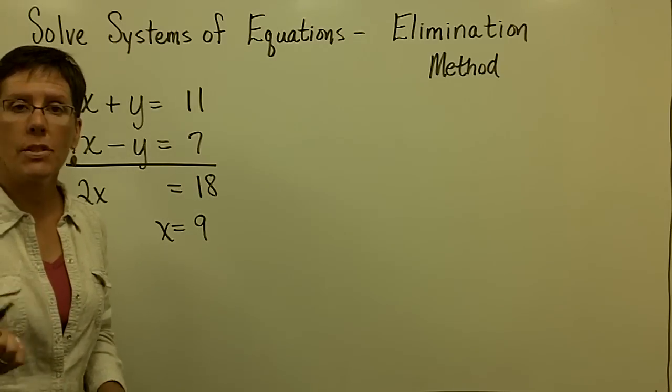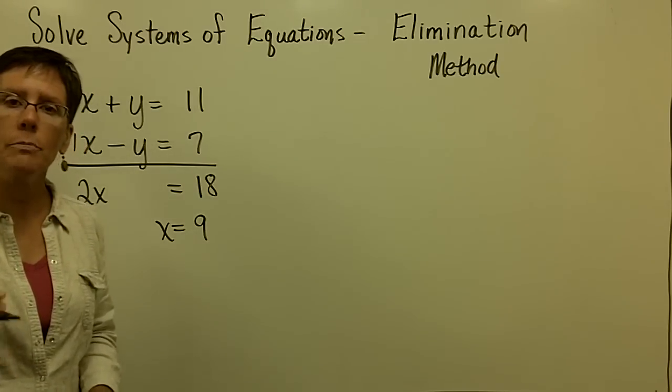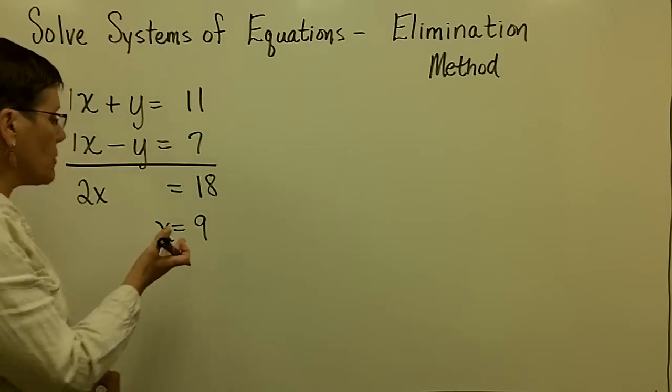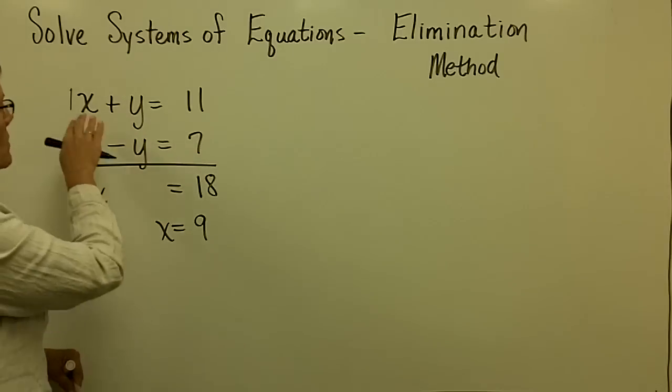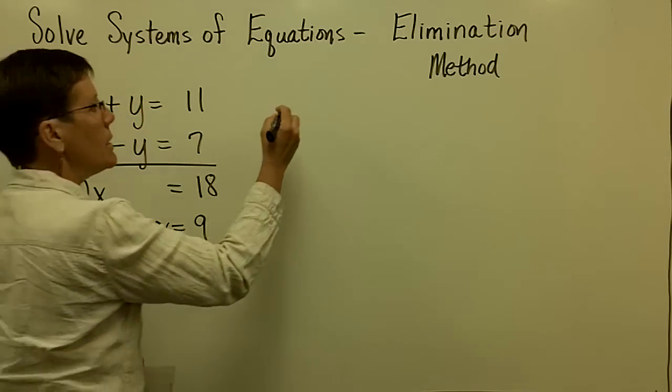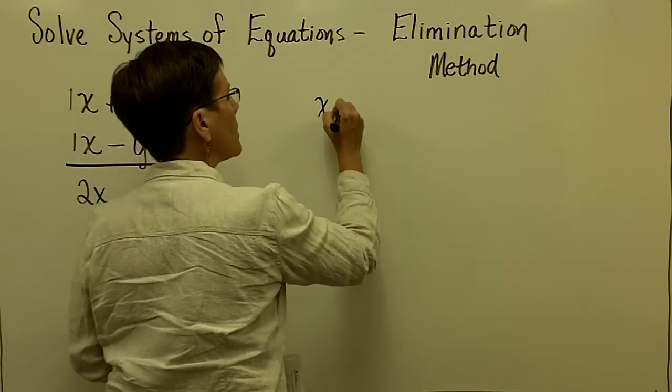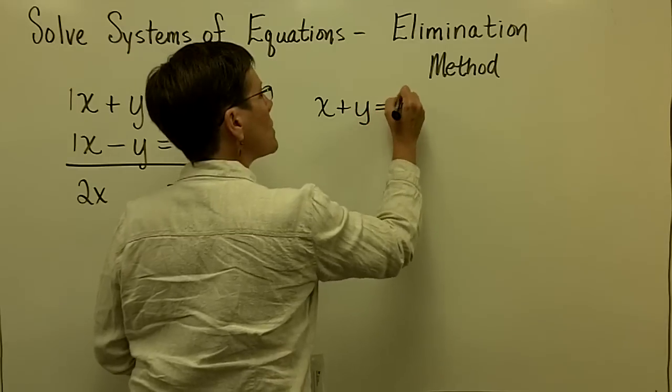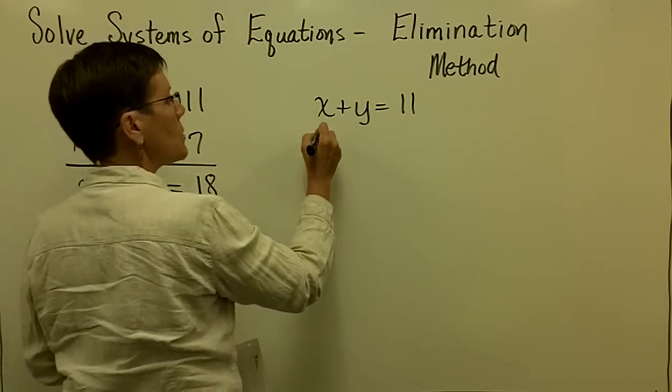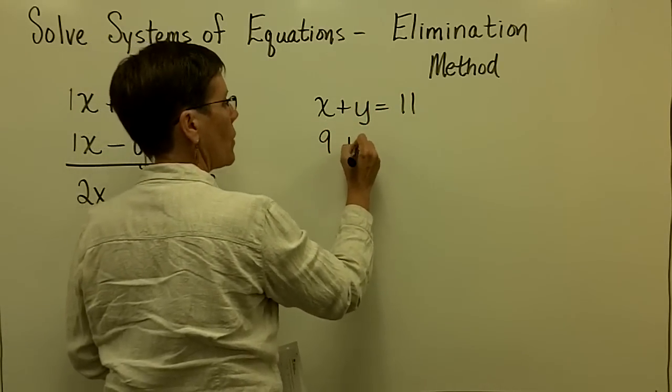What I'll do then is similar to the last type of solution method and that is to take this solution for x and substitute it into one of these two equations. I'm going to go with this one because it's got a plus sign. So I'm going to go with x plus y equals 11 and substitute in a 9 for x.